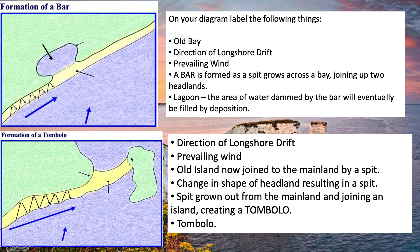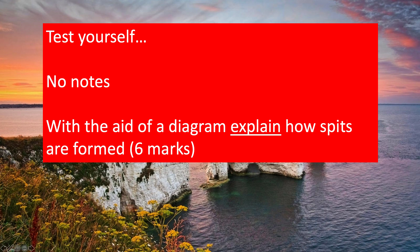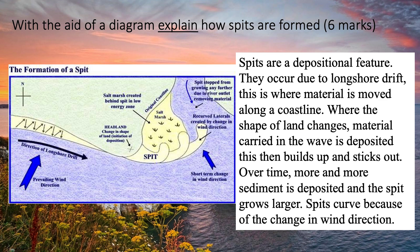Draw that diagram in — all of the arrows match a bullet point on the right-hand side, so you can join them up on your page. That should take you about 10 to 15 minutes. After that, we'll do a question. Ideally, turn your notes over or move them out of the way so it's exactly what you know and can remember from the video. The question is: with the aid of a diagram, explain how spits are formed — six marks. The diagram, its labels, and the explanation are all important. Pause the video; six to seven minutes should be enough.